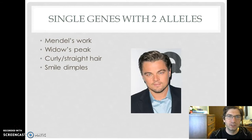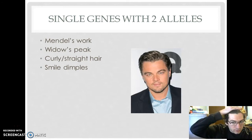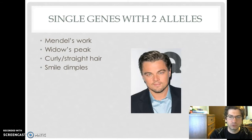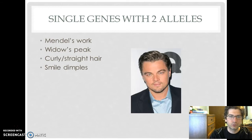First, we have single genes with two alleles. These are your Mendelian traits — Mendel's work, which you looked at a lot in the last chapter. Examples would be your widow's peak — does your hairline come to a point? Mine does. You can see how my hairline is not straight across; it points. Same with Leonardo DiCaprio — he has a nice widow's peak. Some people have curly versus straight hair, smile dimples, free or attached earlobes, waxier versus more solid earwax, hair on your knuckles — things like that. Those are all single genes controlled by two alleles.